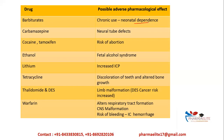A few more examples: chronic use of barbiturates causes neonatal dependence. Carbamazepine causes neural tube defects — a very typical example. Cocaine and tamoxifen cause a high risk of abortion; if a mother is consuming cocaine or tamoxifen, there is an increased chance of abortion. Ethanol causes fetal alcohol syndrome.